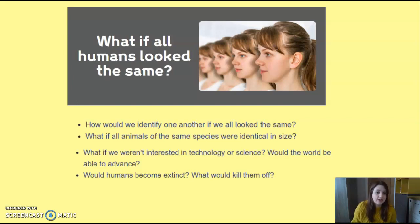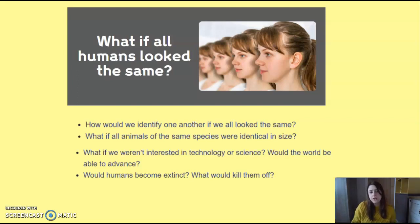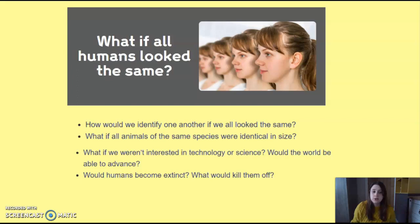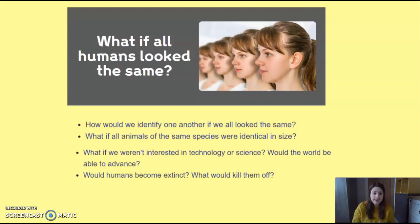What if we weren't interested in technology or science? If we were all the same but that person wasn't really interested in science, what would happen to the world? Would we be able to create new things and advance? And would humans become extinct? Because if something affects one of us and we're all identical, it would affect everybody else — we would have the same makeup, the same cells inside. Pause and think about the positives and negatives of everybody looking exactly the same.